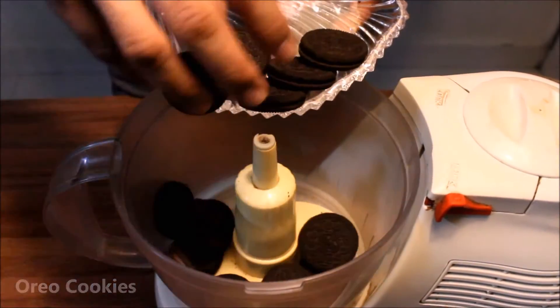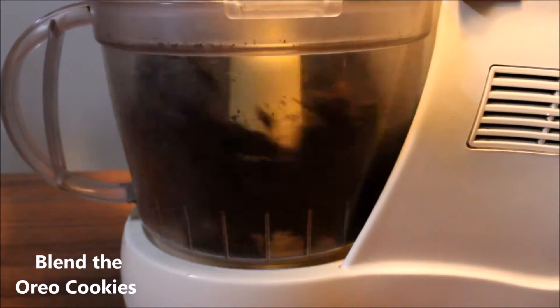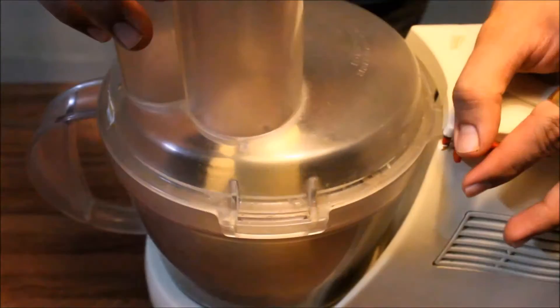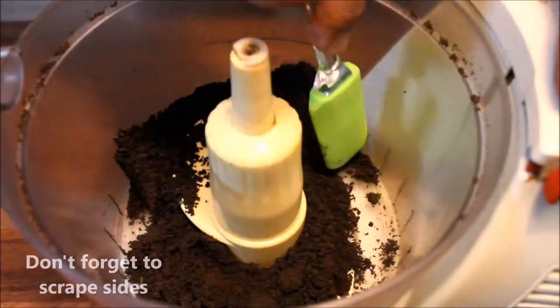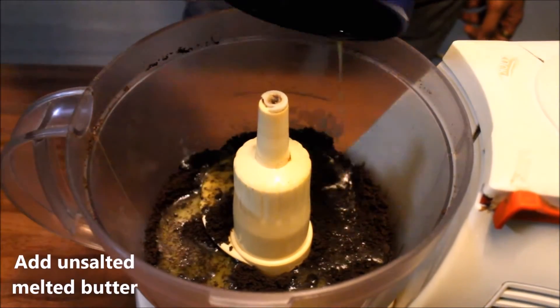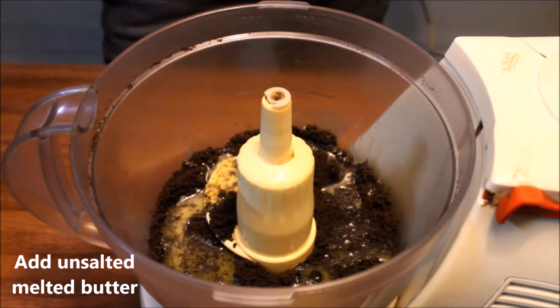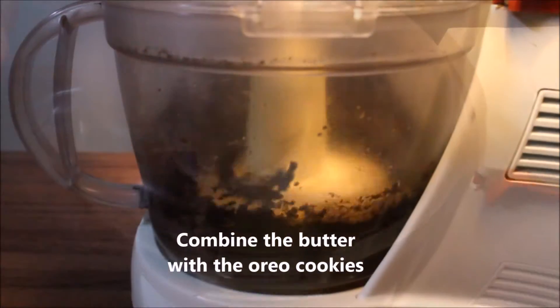We need Oreo cookies and a blender. You need to blend these Oreo cookies till they turn into a fine powder or you have a granular texture. As you can see right now, once done just don't forget to scrape the sides and then add unsalted melted butter into it. Just make sure that the butter is at room temperature and not hot.